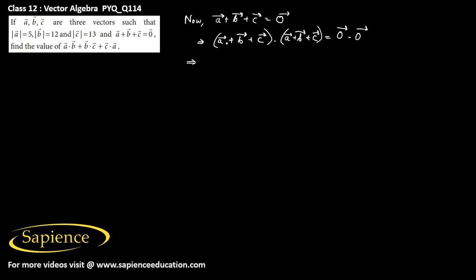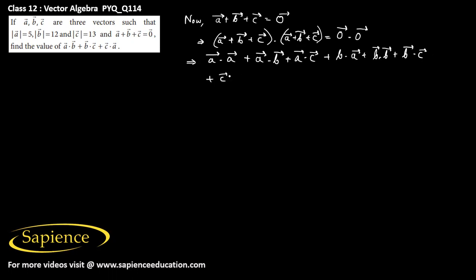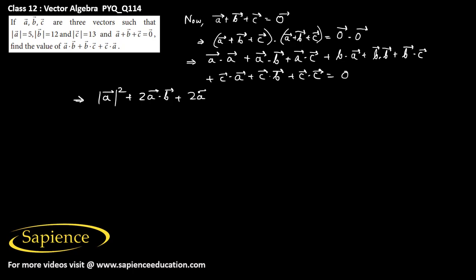Expanding the dot product gives: a·a + a·b + a·c + b·a + b·b + b·c + c·a + c·b + c·c = 0. Now a·a is |a|², and since a·b + b·a = 2(a·b), and a·c + c·a = 2(a·c).